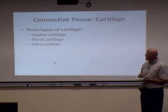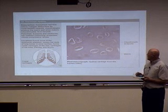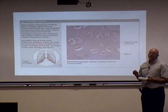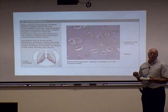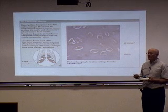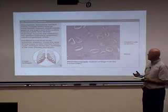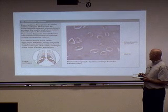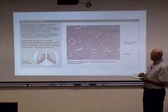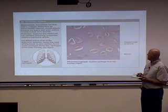Now let's look at cartilage — three main types: hyaline, elastic, and fibrocartilage. Hyaline cartilage is very important: initially the embryonic skeleton is completely made of it, then it undergoes ossification and turns into bone as the fetus matures. In adults, we find hyaline cartilage in the costal cartilages of the ribs. It has a lot of matrix and chondrocytes, the cells that make cartilage.